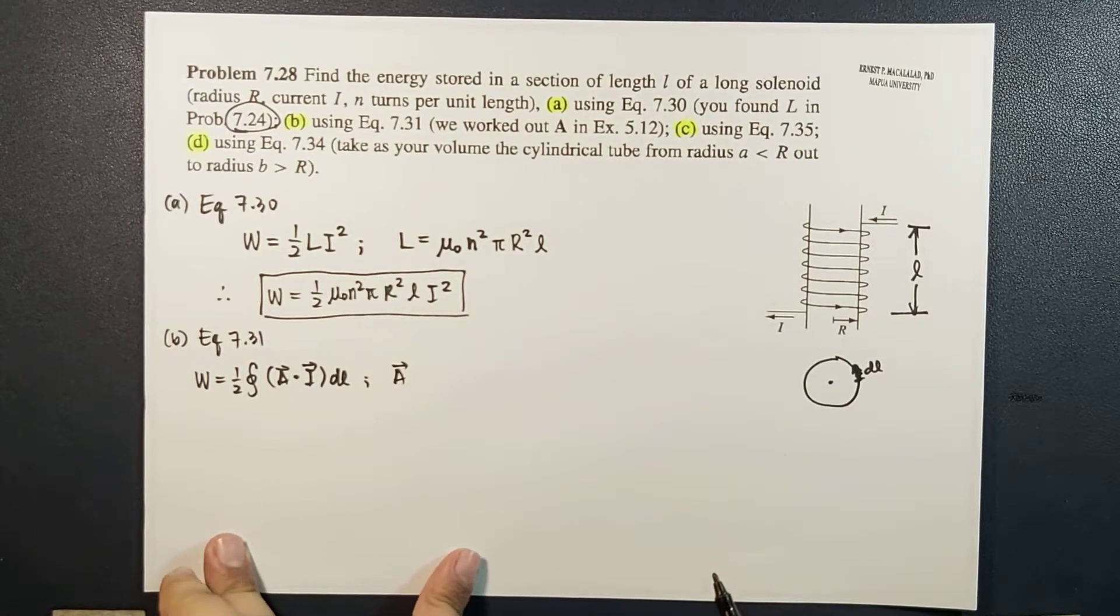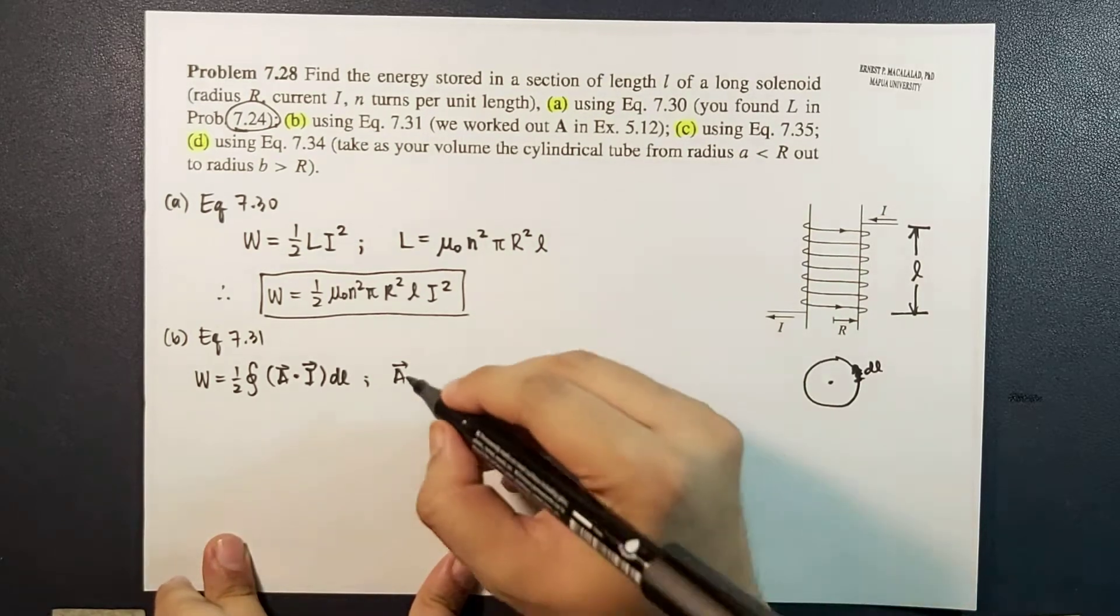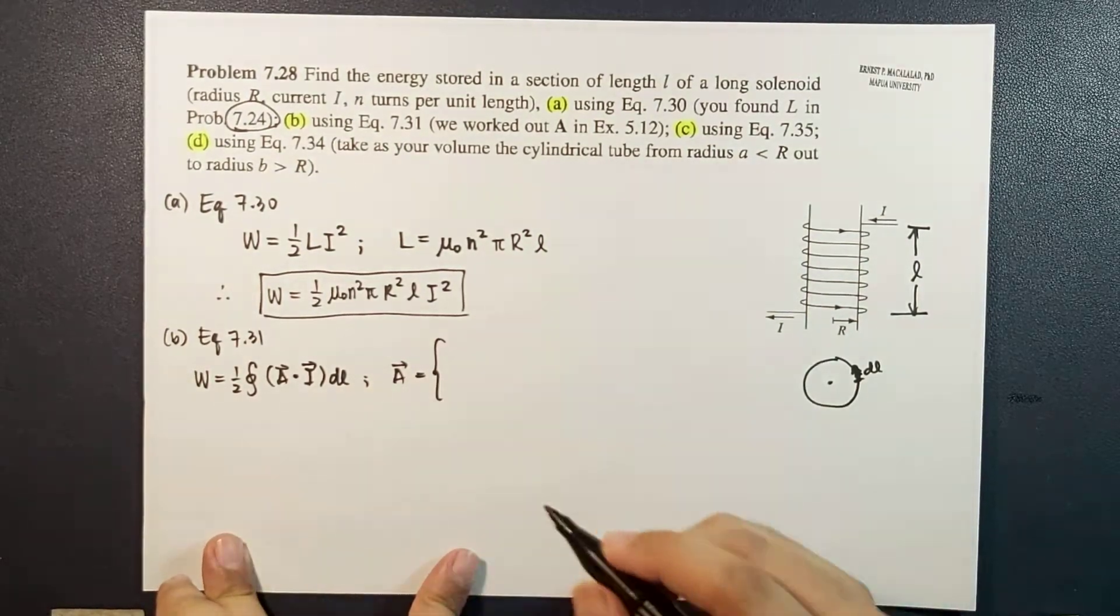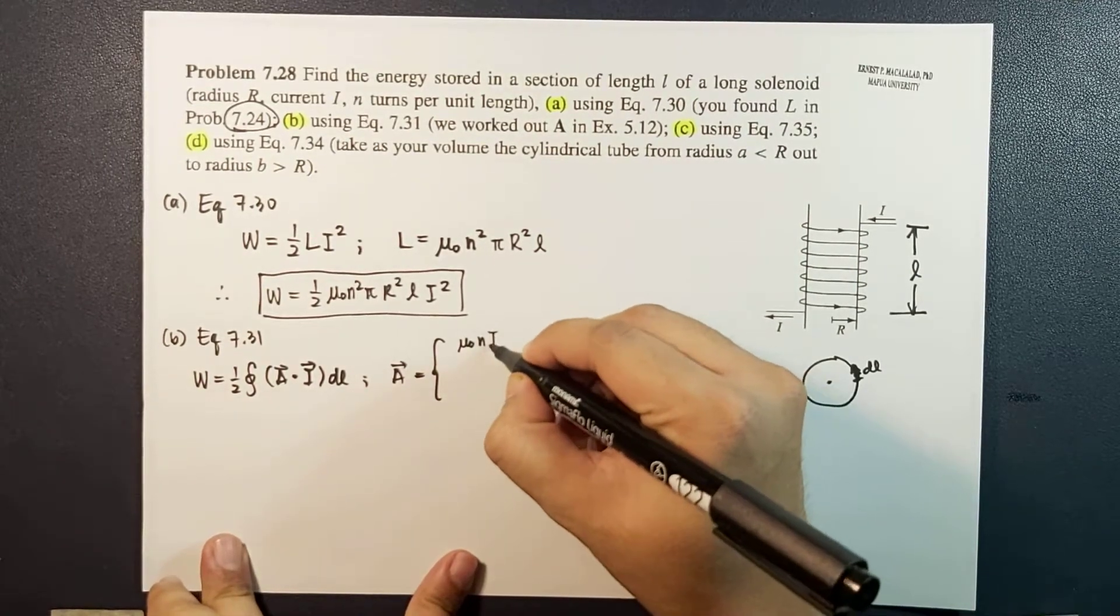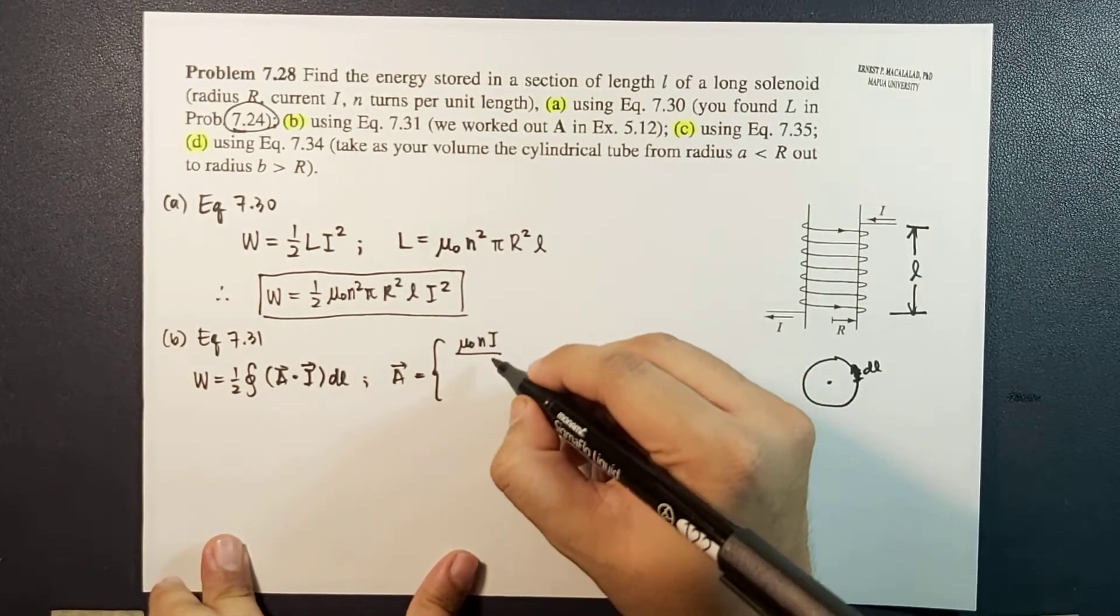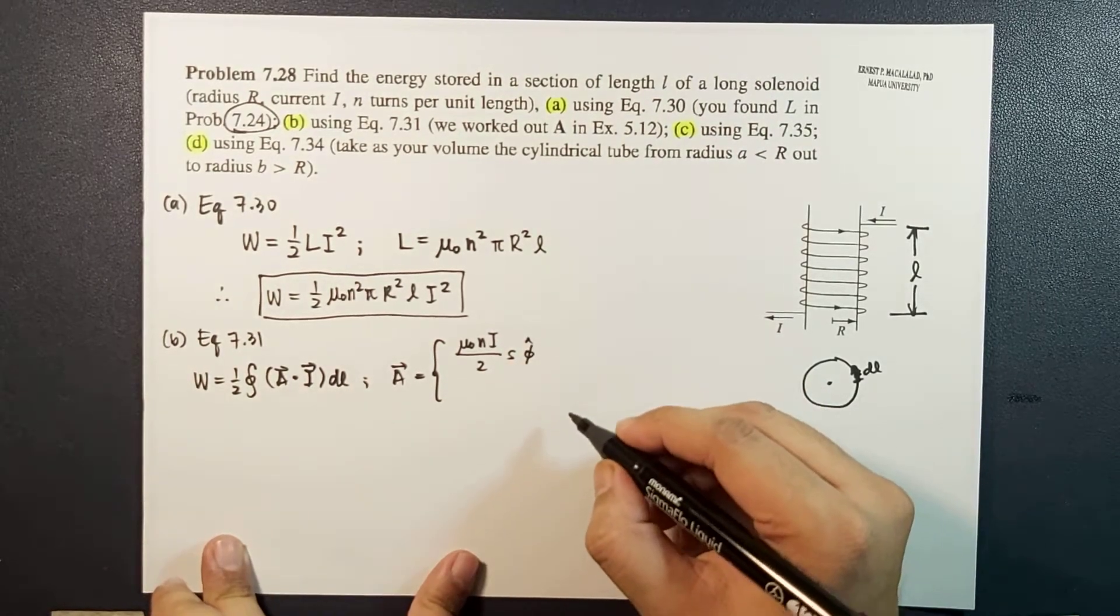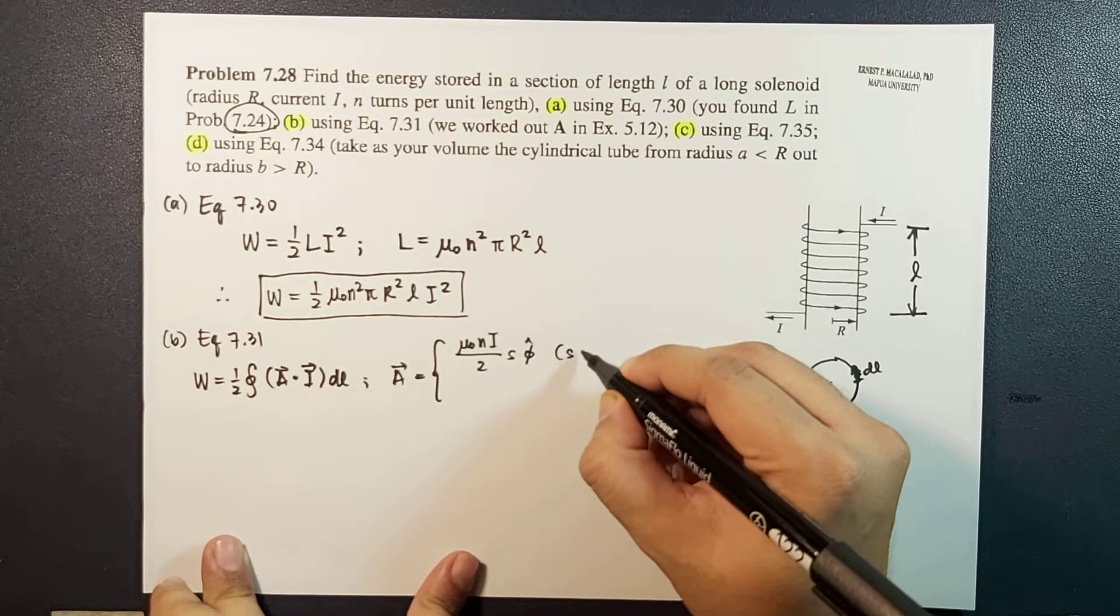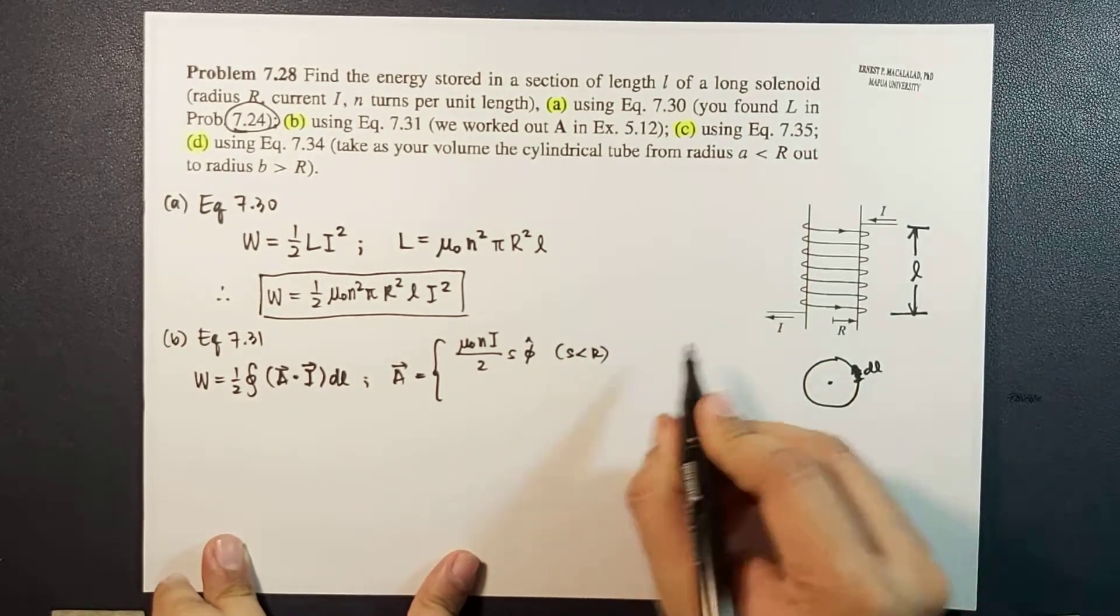We know that the magnetic vector potential A is given by two statements. First one is μ₀ni over 2 times s φ̂, and this is for s less than r. In other words, this is for inside.